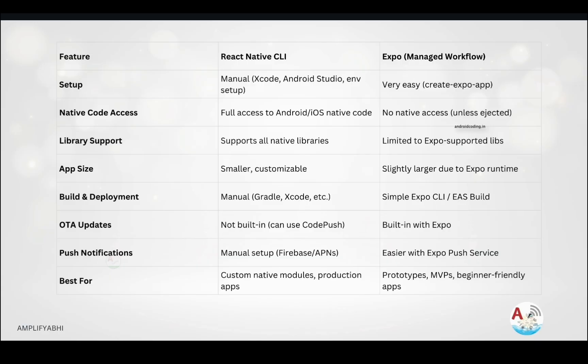Regarding library support: with React Native CLI we have full access to native libraries. In Expo, library support is limited. For app size, native CLI apps are smaller because you only include what you require, whereas Expo bundles everything from the initial stage, making the app size slightly larger. For build and deployment, CLI is a manual process similar to native Android and iOS, while Expo makes building and deploying to your device much simpler.